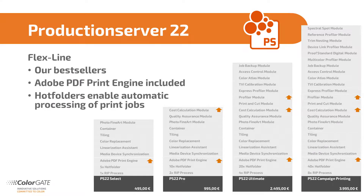ColorGate's Production Server is available in different editions. In the FlexLine range, you will find our bestsellers for the commercial sector — that means for advertising or large format printing, among others. Our FlexLine versions include the Adobe PDF Print Engine, Container & Tiling, and they feature our Hot Folder concept. This allows you to process print jobs automatically and, from the Pro version upwards, also to calculate several jobs simultaneously. The unrivaled media device synchronization enables you to align color within the printer configuration or when color shifts may become apparent due to technical or environmental changes.